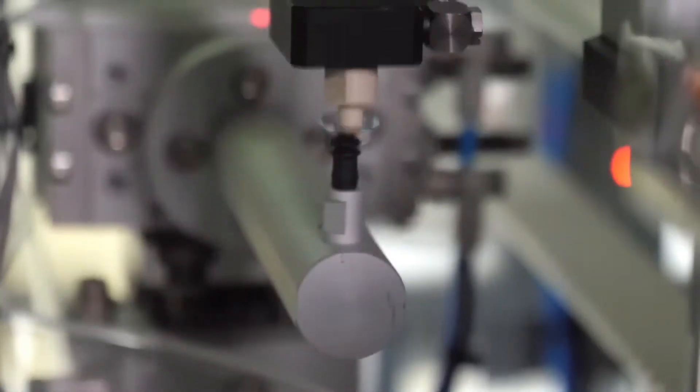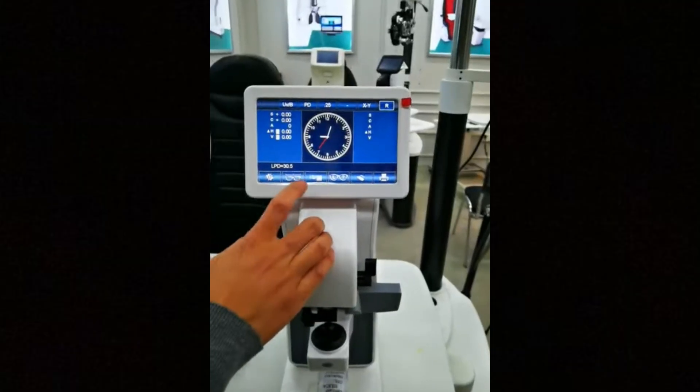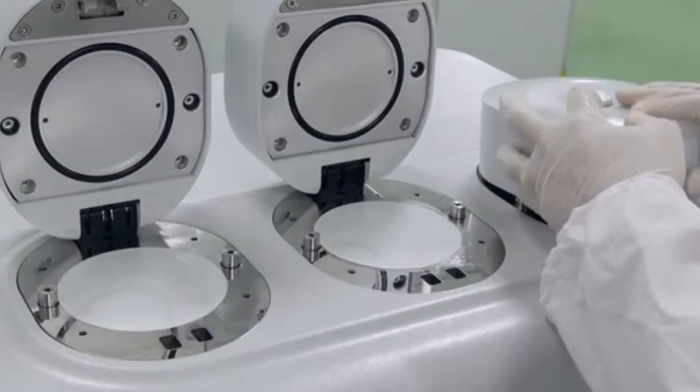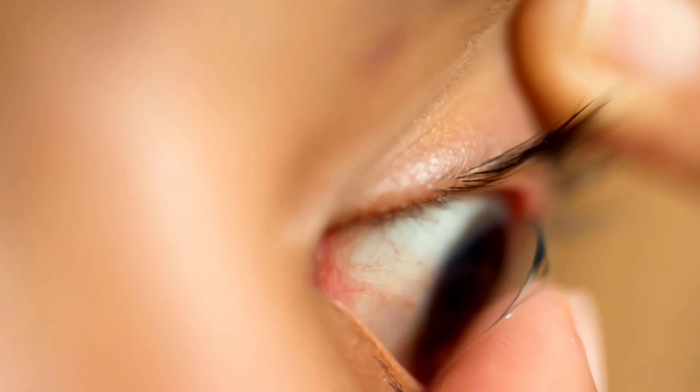Each lens is measured for the correct curvature and power to make sure it actually corrects for the vision errors that it's supposed to. Oxygen permeability testing makes sure that enough oxygen is able to pass through to keep your eyes healthy.